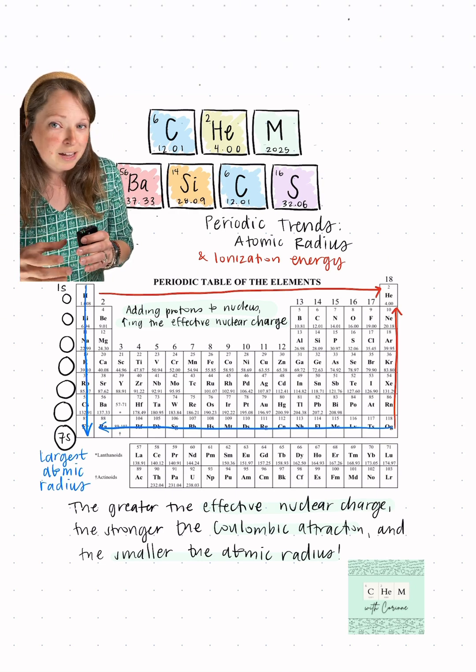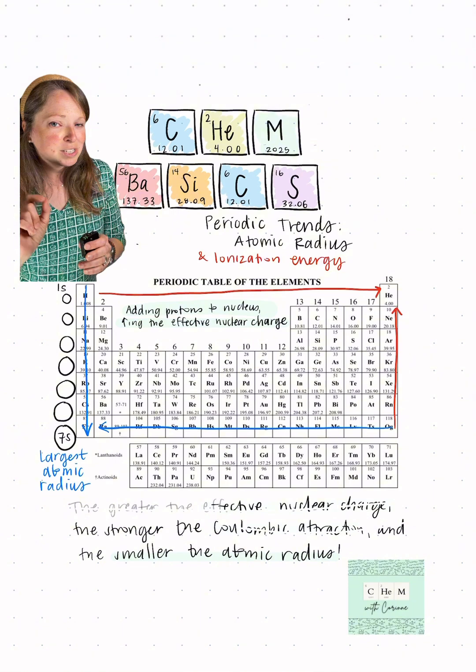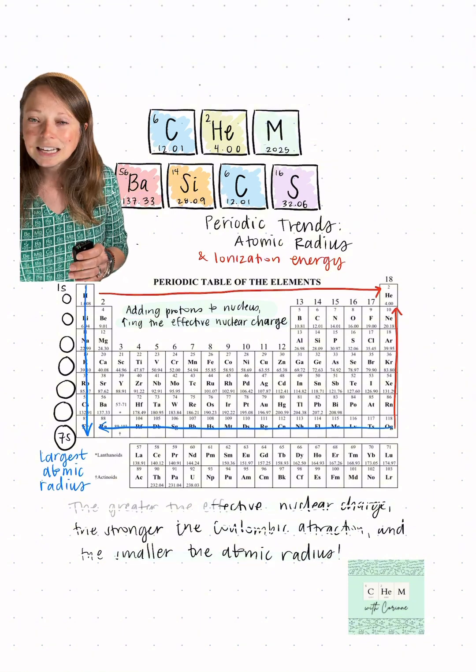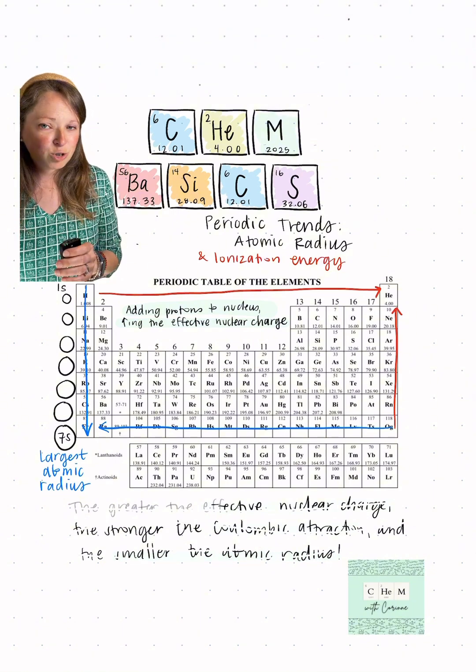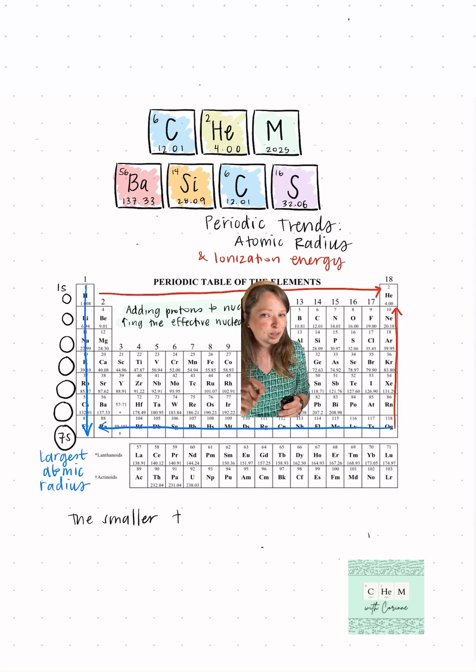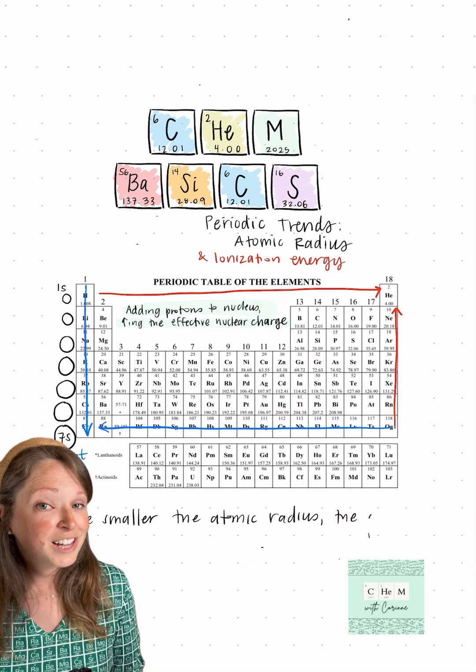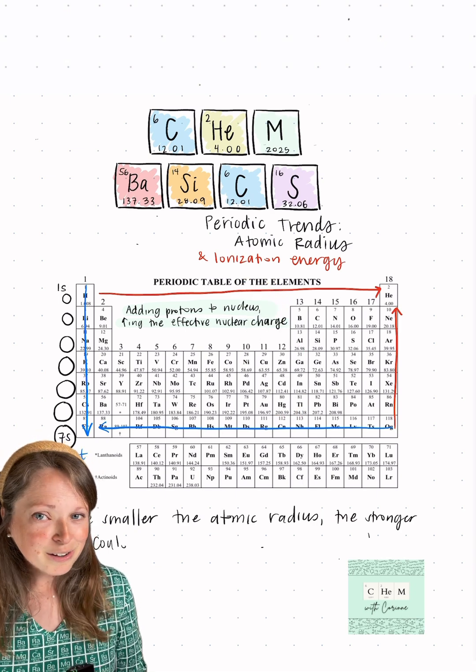So that means with the larger atomic radius, we have a greater distance. Therefore, the smaller the attractive forces and the easier it's going to be to remove an electron. Large atomic radius means low ionization energy. So ionization energy is going to be opposite that of atomic radius.